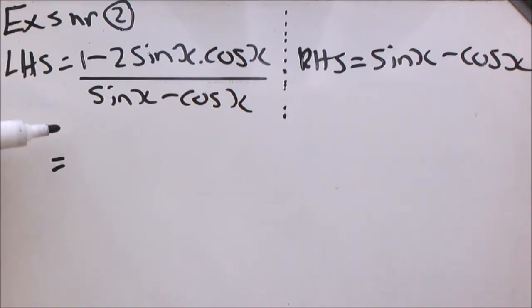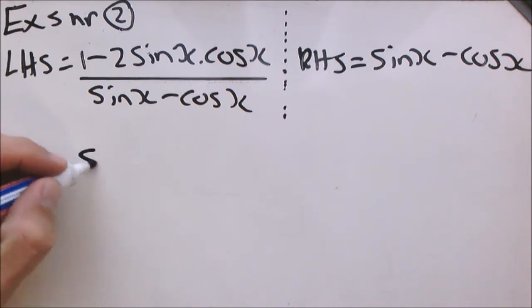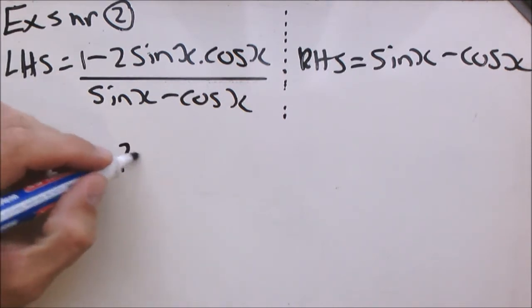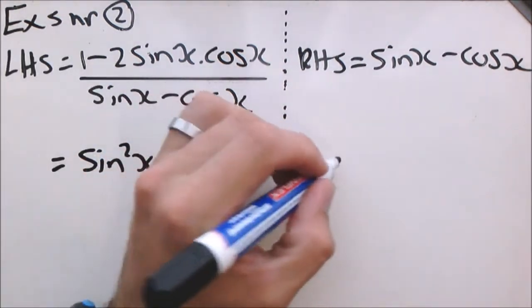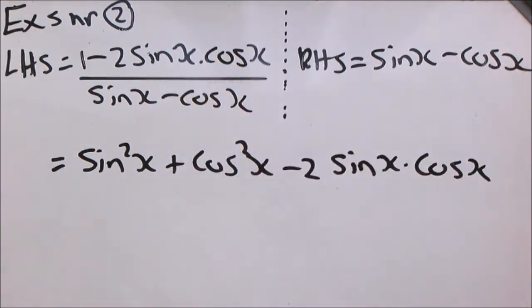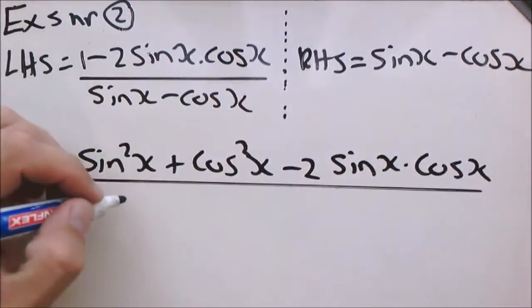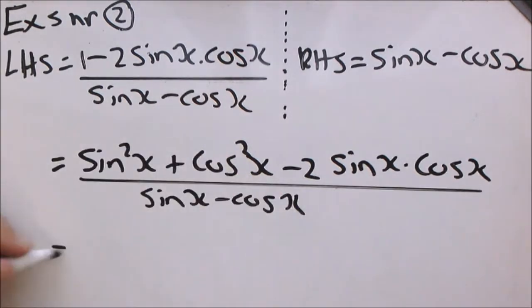Are there any identities we can apply? Well, there is only one identity we can apply and that is the squared identity: 1 is equal to sin squared x plus cos squared x. So in this case we can do it that way. We say sin squared x plus cos squared x minus 2 sin x times cos x, divided by sin x minus cos x.